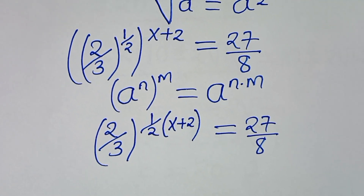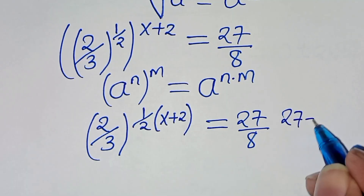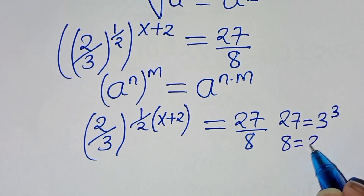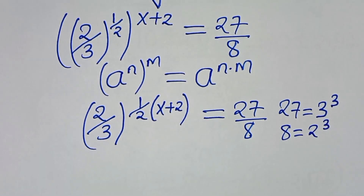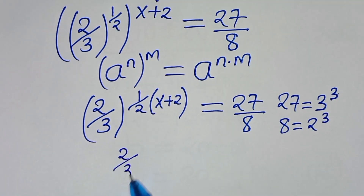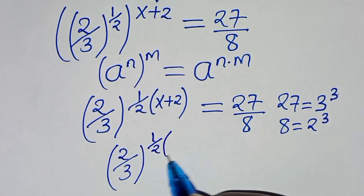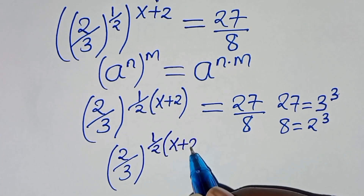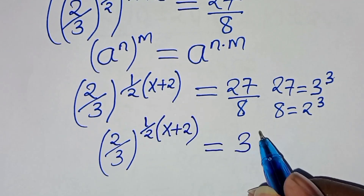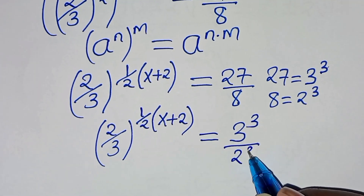The next step: we can express 27 as 3 to the power of 3, and 8 as 2 to the power of 3. Substituting this, we have 2 over 3 raised to the power of one half times (x plus 2), equal to 3 to the power of 3 divided by 2 to the power of 3.